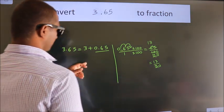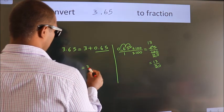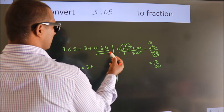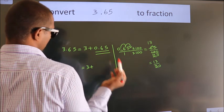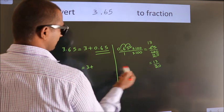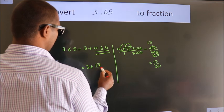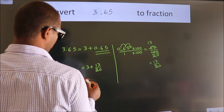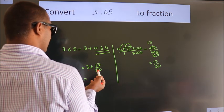Now here, 3 plus, in place of 0.65, now we write this fraction 13 by 20. 3 plus 13 by 20.